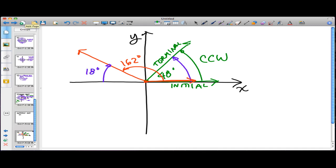How did I get that? Well, if it's 180 degrees from this, from here to here, then 180 minus 162 is 18 degrees.